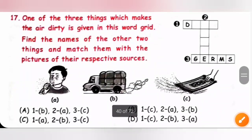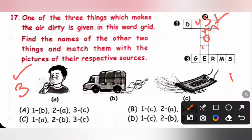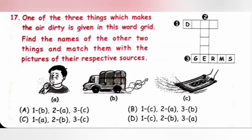Question 17: One of three things that makes air dirty is given in a word grid. Find the other two and match with pictures. A germs — A3. B smoke — B2. C dust — C1. So the correct matching is A3, B2, C1. Option D is the correct answer.